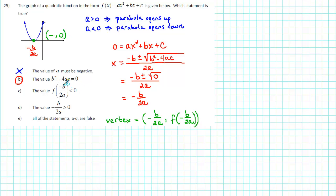So f(-b/2a) is not negative. f(-b/2a) is equal to 0. So c is a false statement.